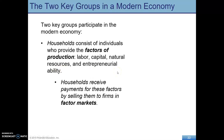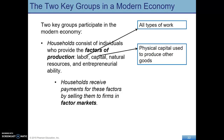Households get paid for using their factors by selling them to firms in factor markets. So labor — that's going to be all types of work. Workers work and receive wages. Capital, remember, is an item used to produce other goods. So it could be a wheelbarrow, it could be some kind of machine, computer — anything like that that's used to produce other goods.